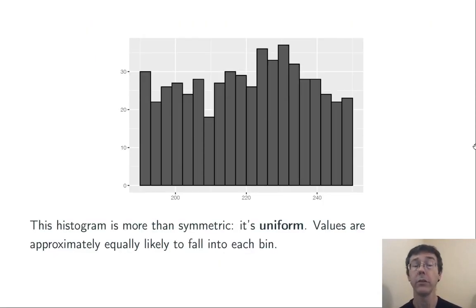A particular sort of symmetric graph is a uniform graph, where there's no particular pattern to the data. Values are approximately equally likely to fall into each of the bins, like in this case.